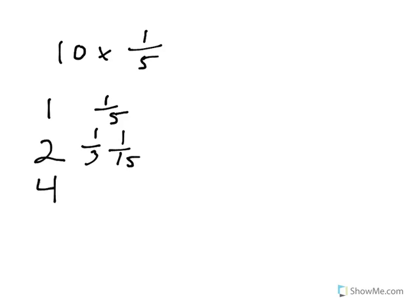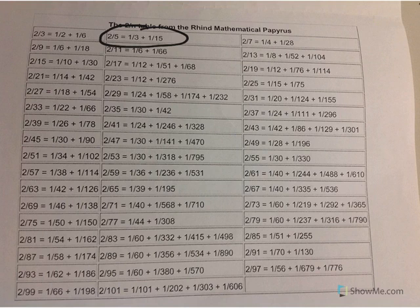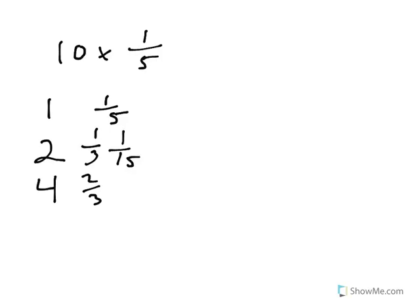Now, when I double each of these, one-third becomes two-thirds. One-fifteenth becomes two-fifteenths. And for that, we need to go back to the chart and find two-fifteenths, which evidently equals one-tenth plus one-thirtieth. So, I come back over here and write one-tenth, one-thirtieth.